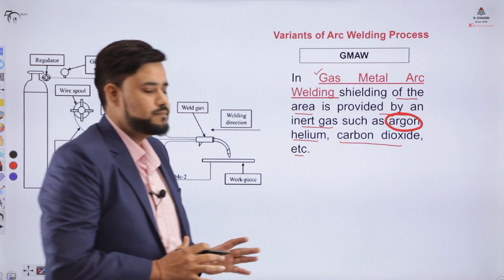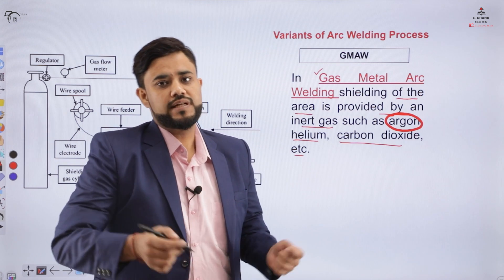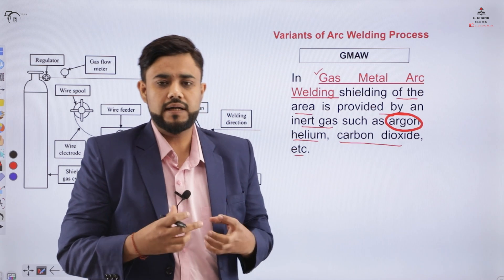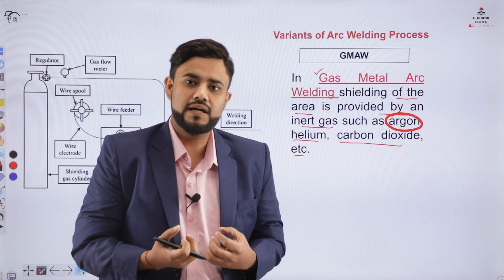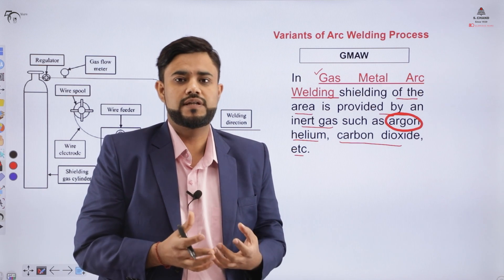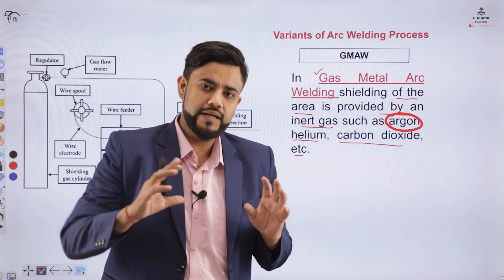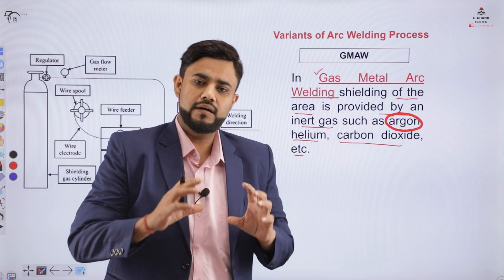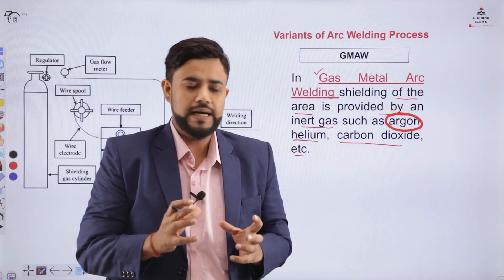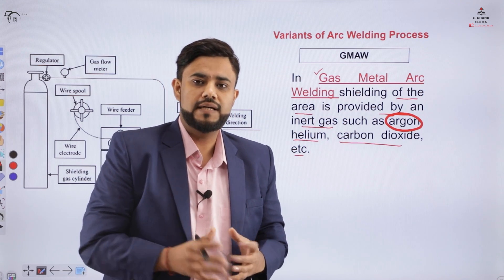GMAW is used for a continuous type of welding process. Because the arc continuously comes in contact with the open environment, defects can be produced on the surface. To avoid contamination, an inert environment is provided between the arc and the weld metal by supplying a shielding or inert gas.